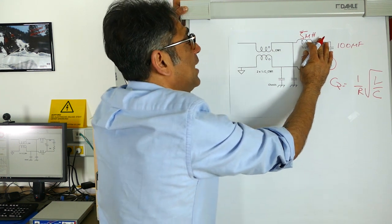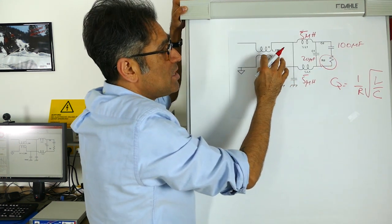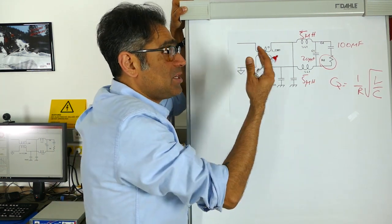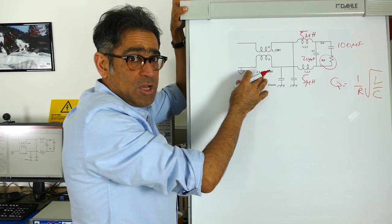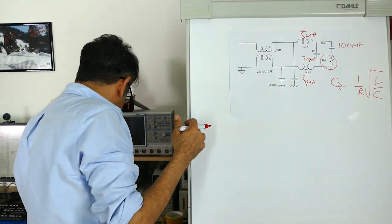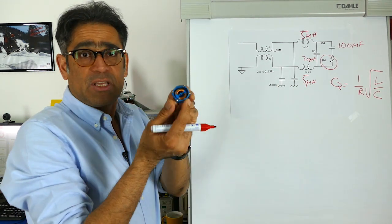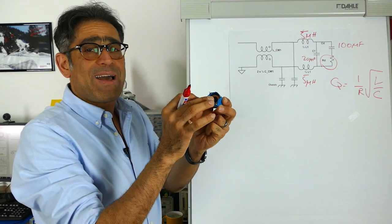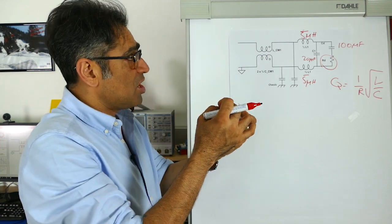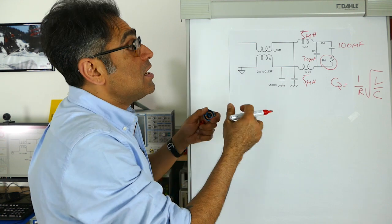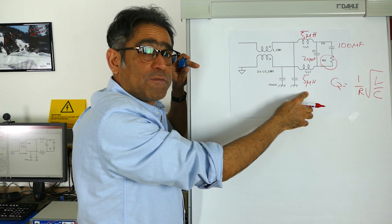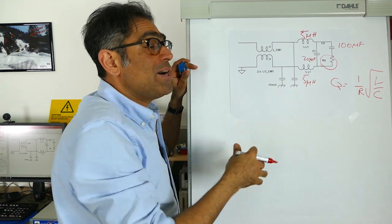Now we're going to have to select the components for the common mode section. If you remember from one of the previous videos, we said that the leakage inductance of a common mode choke manifests itself as differential mode inductance. So if we have a common mode choke, there is a certain amount of leakage within it which manifests itself as differential mode inductance.